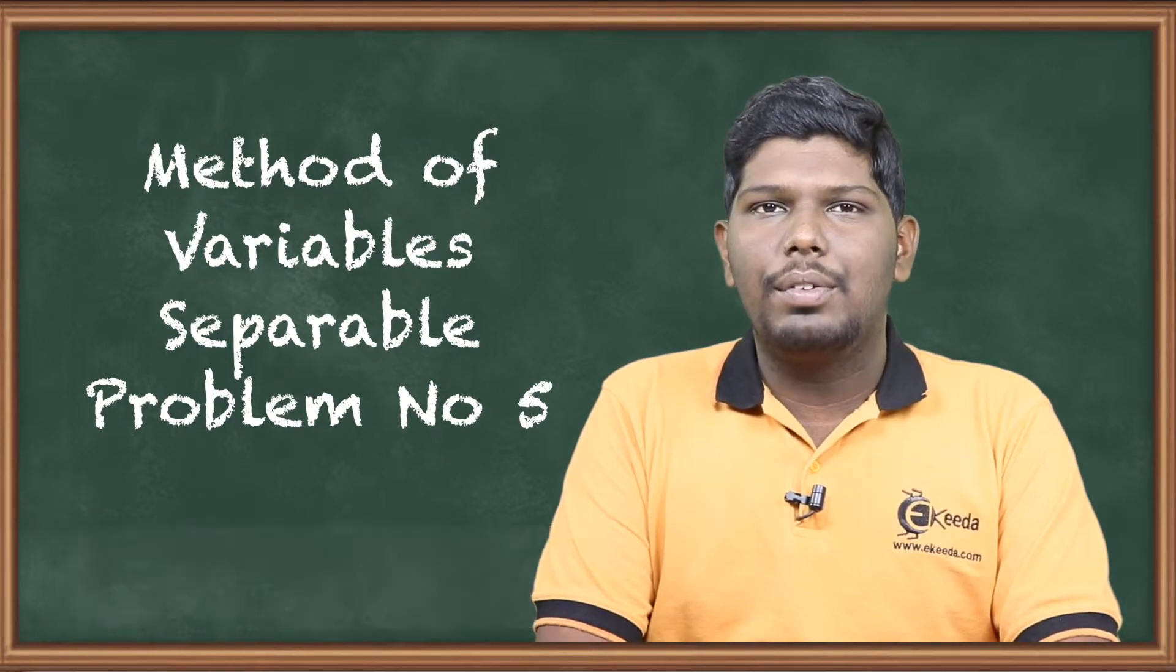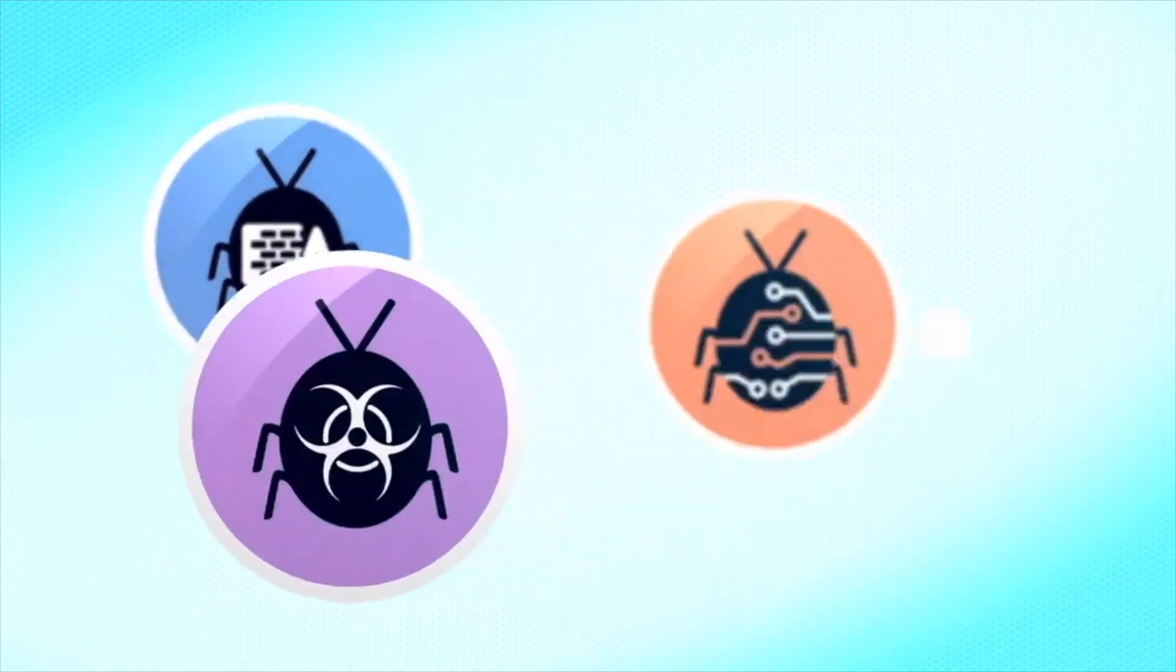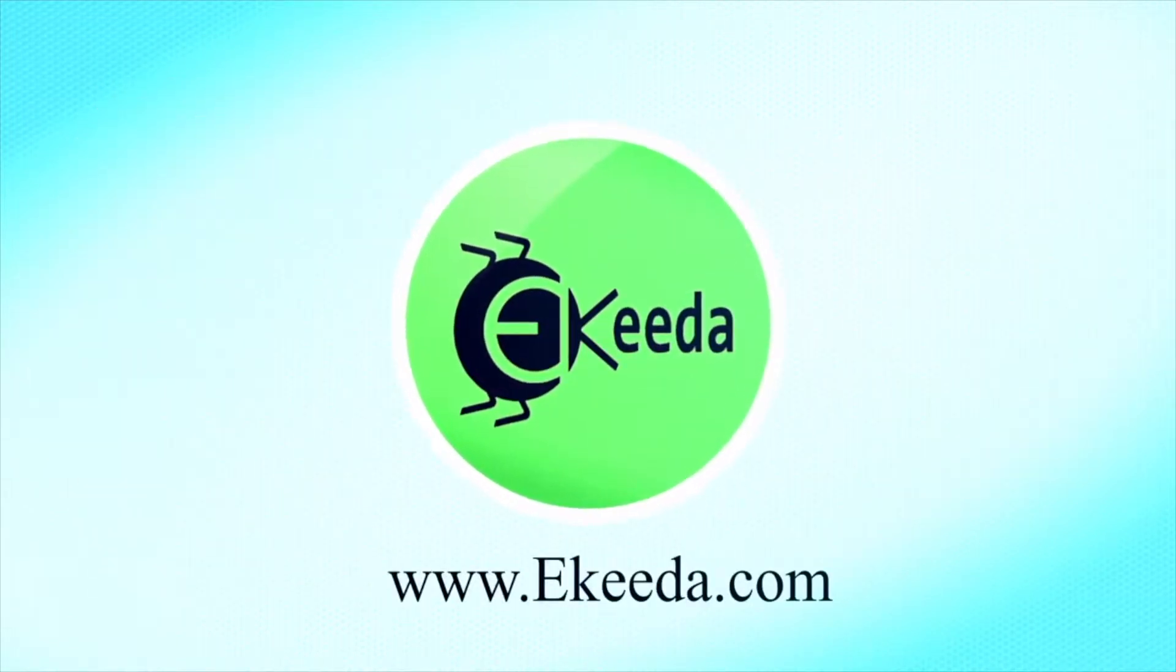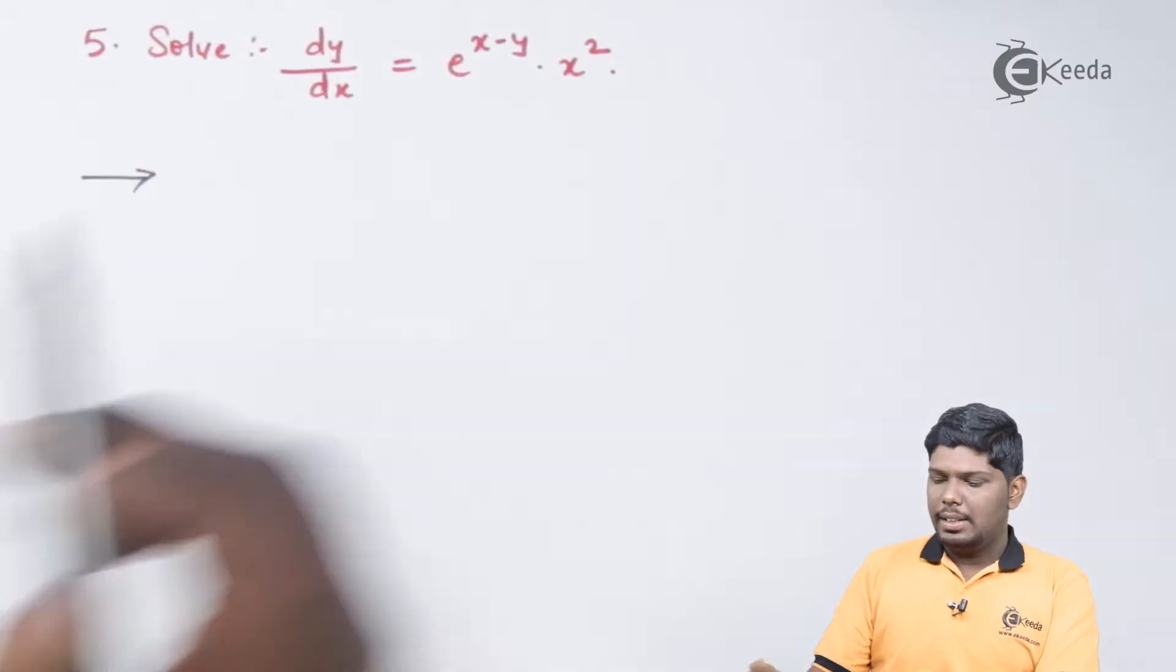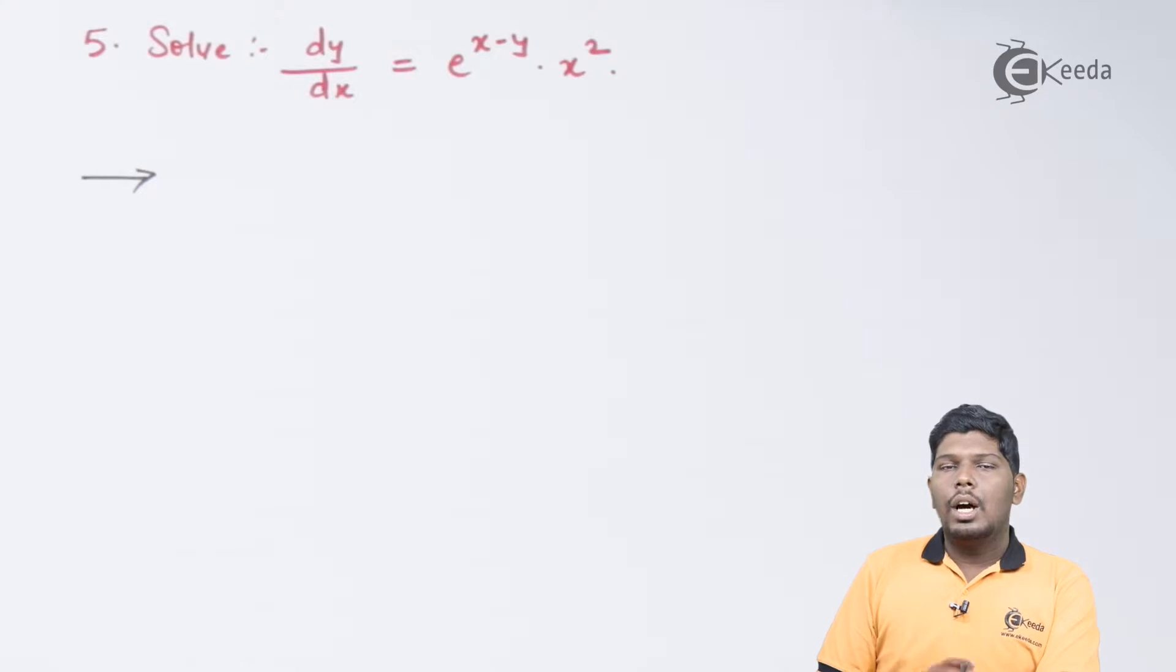So, let us start with problem number 5. Solve dy by dx is equal to e raised to x minus y into x squared.